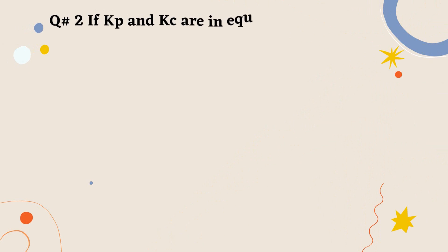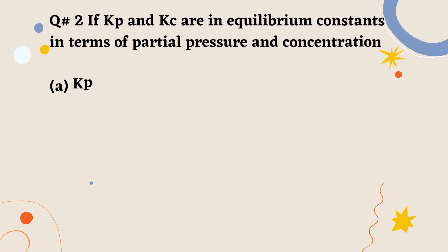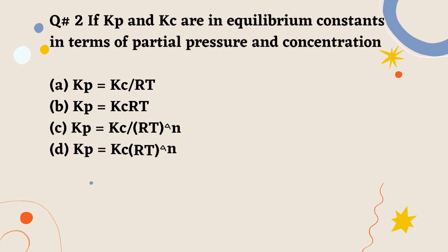Question number 2. If Kp and Kc are equilibrium constants in terms of partial pressure and concentration. A. Kp equals Kc over RT. B. Kp equals Kc RT. C. Kp equals Kc over RT delta N. D. Kp equals Kc RT delta N. Correct option is D.